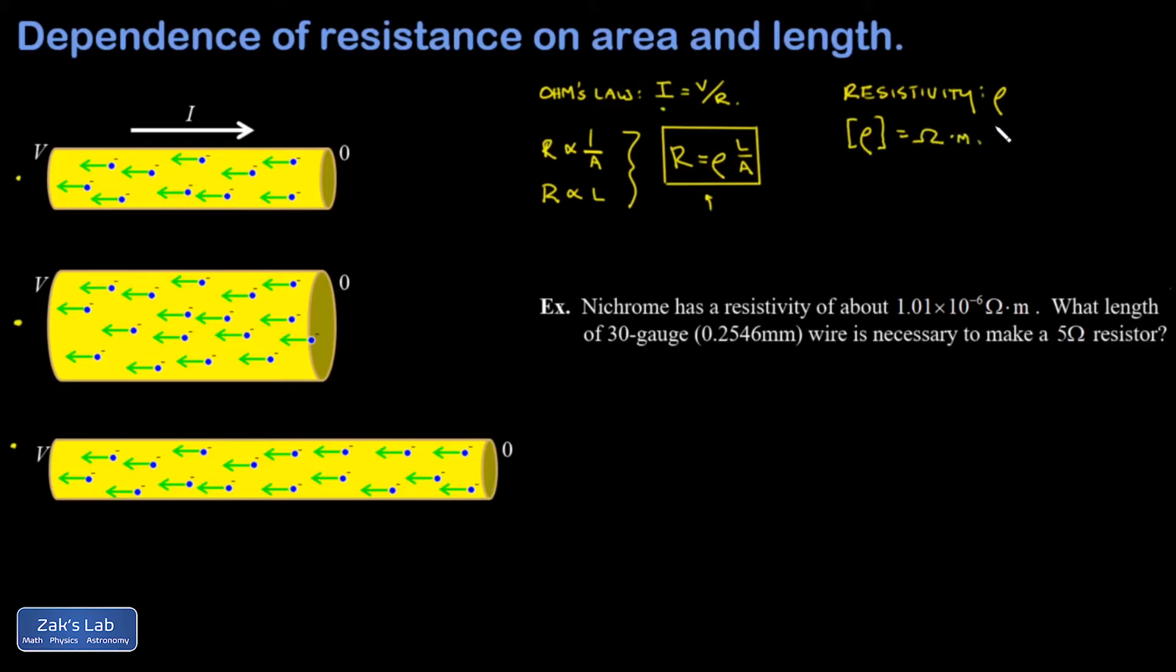Finally we'll wrap things up with an example. Nichrome has a resistivity of about 1.01 times 10 to the negative 6 ohm meters. What length of 30 gauge wire, 0.2546mm diameter, is necessary to make a 5 ohm resistor?